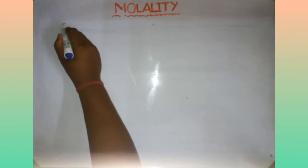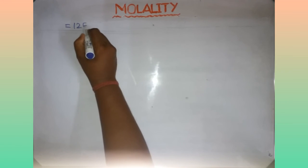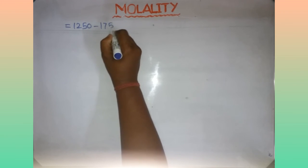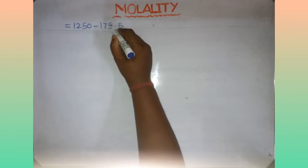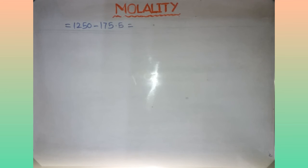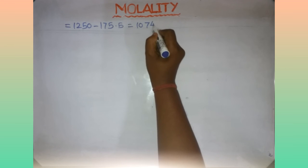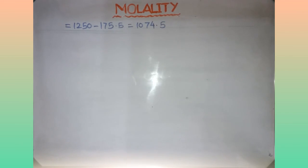Mass of solution is 1250, mass of solute is 175.5. So mass of solvent equals 1250 − 175.5 = 1074.5 grams.